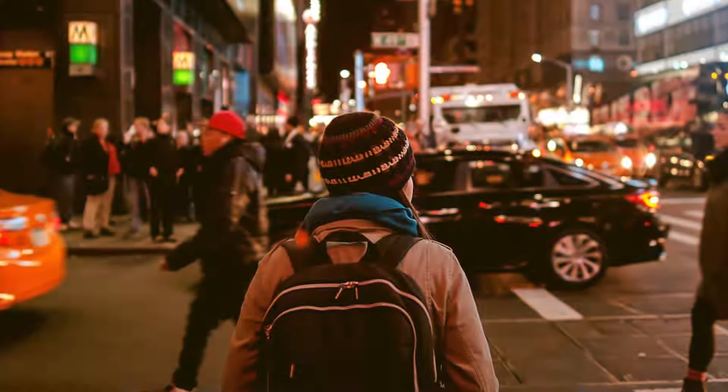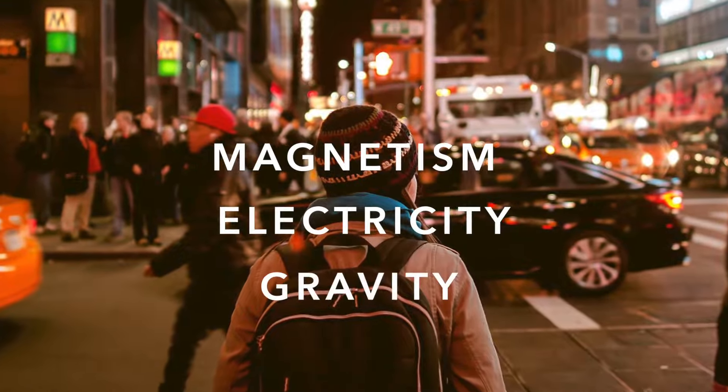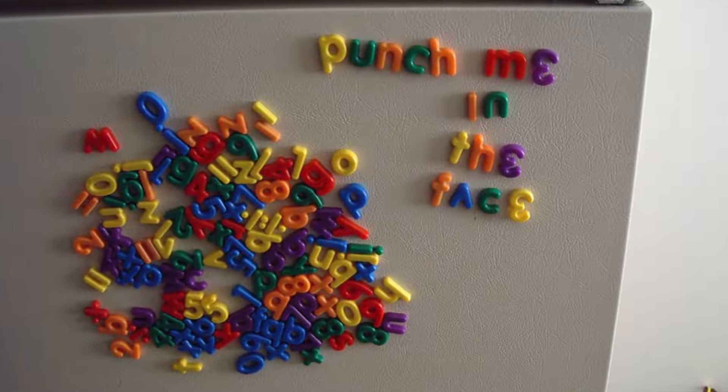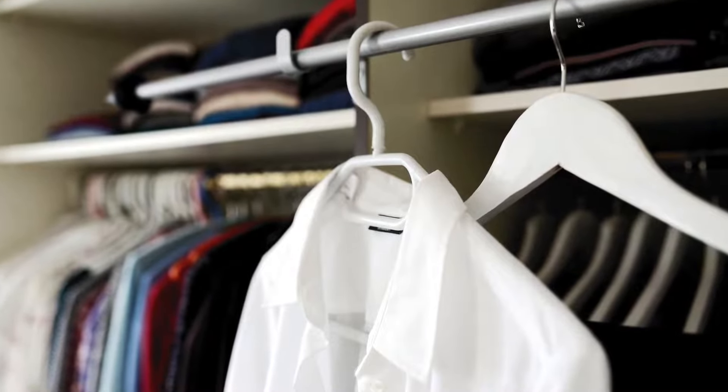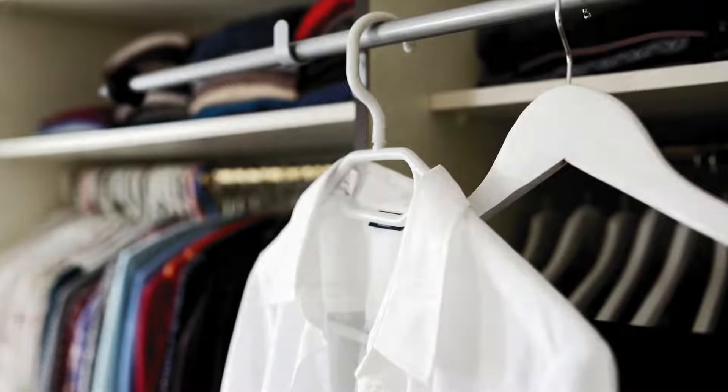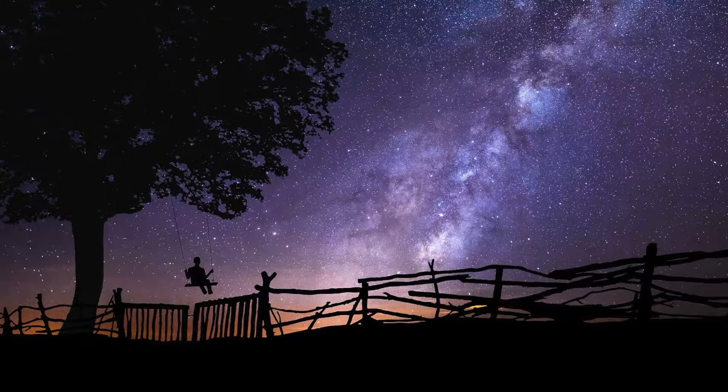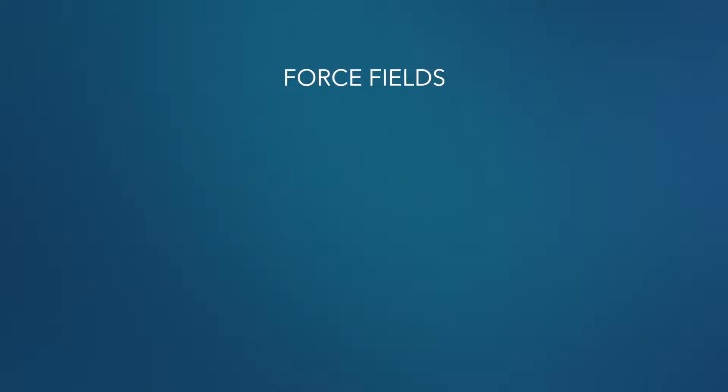Alright, so from everyday life, you're already familiar with magnetism, electricity, and gravity. Magnetism is what makes magnets stick to your refrigerator. Electricity in its static form makes your clothes cling together on a dry day. And of course, gravity is what holds you to the ground and keeps planets orbiting the sun.